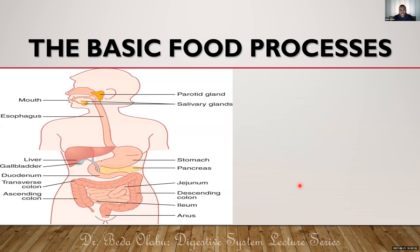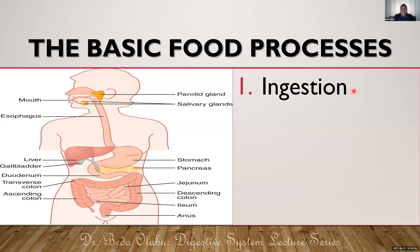In physiology you'll be told that there are four basic food processes. The first process is ingestion, which is the uptake of food up to the stomach. Ingestion involves two key steps: the first is mastication, which is chewing — a mechanical breakdown of food in the mouth — and the second step is swallowing, or deglutition.